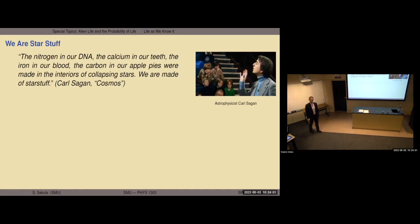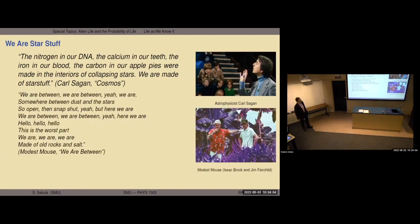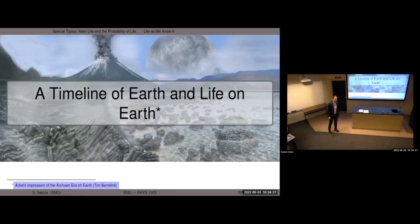I love this quote from Carl Sagan: the nitrogen in our DNA, the calcium in our teeth, the iron in our blood, the carbon in our apple pies were made in the interiors of collapsing stars. We are made of star stuff. The only thing original to the Big Bang is the hydrogen. Another way of putting it from Modest Mouse: we are somewhere between dust and the stars.